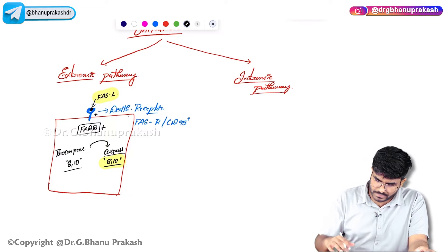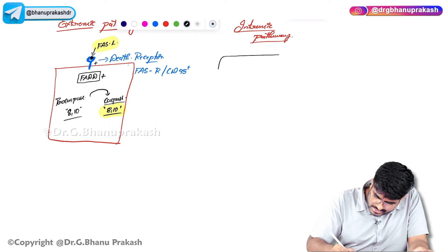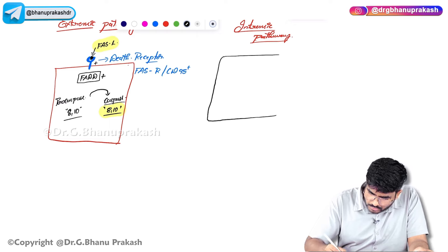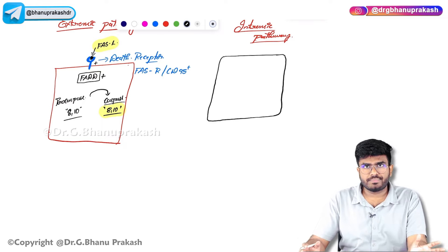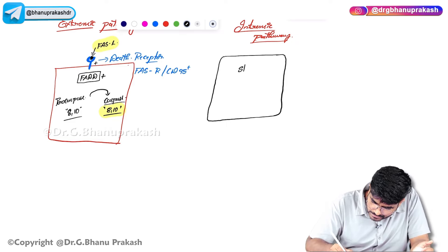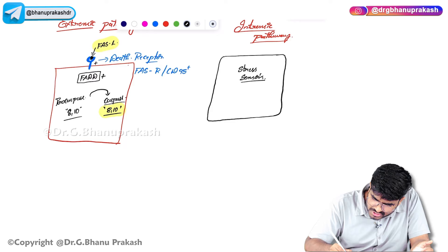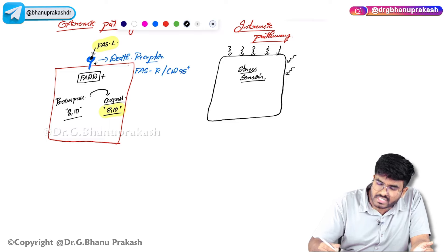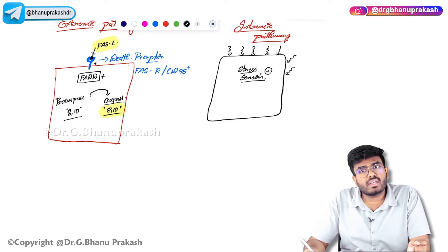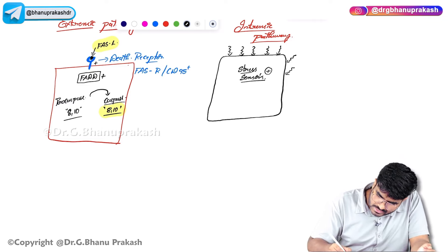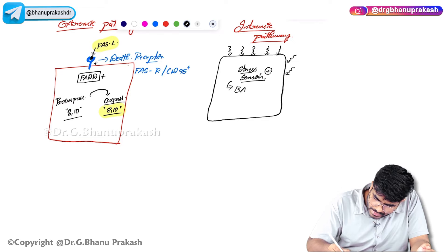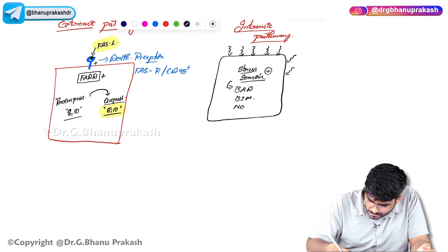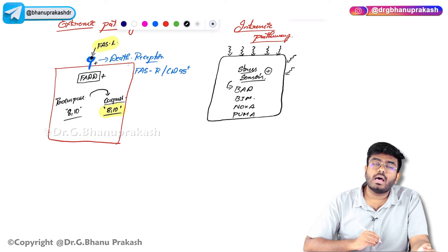In the intrinsic pathway, within the cell something is happening. Your cells are always checking their environment — whether everything is okay or not. Inside the cell there are stress sensors. They constantly check whether there is any stress. If stress signals are coming to the cell, these stress sensors are activated. Examples of stress sensors include BAD, BIM, NOXA, and PUMA — all of these are stress sensors that will be activated when stress is detected.